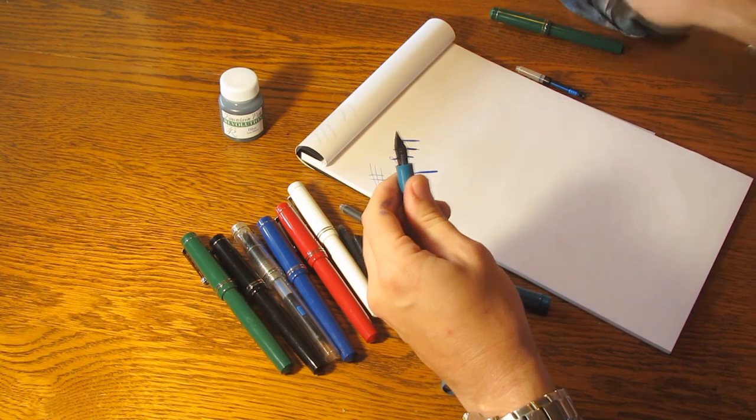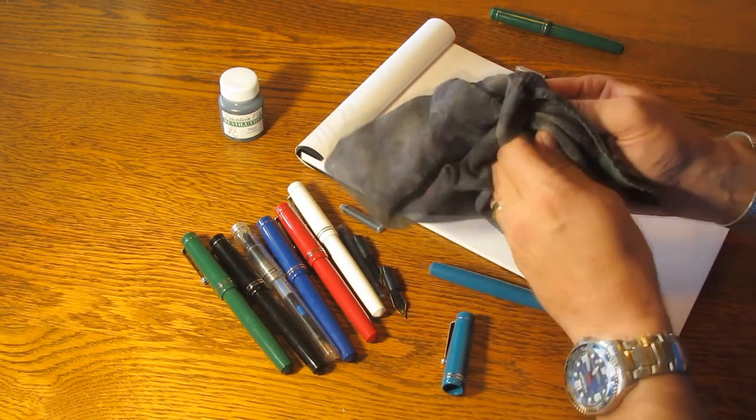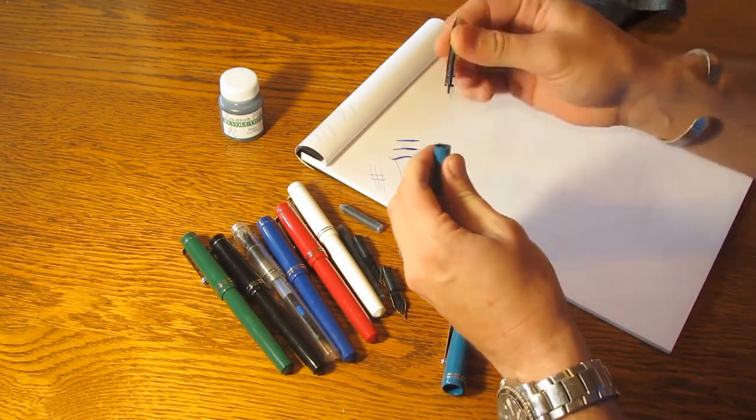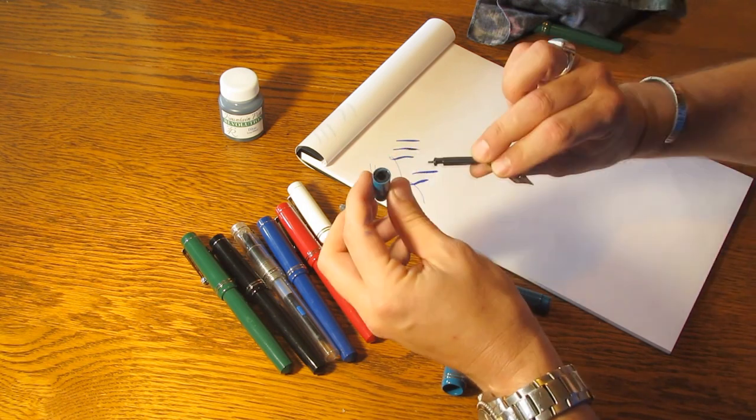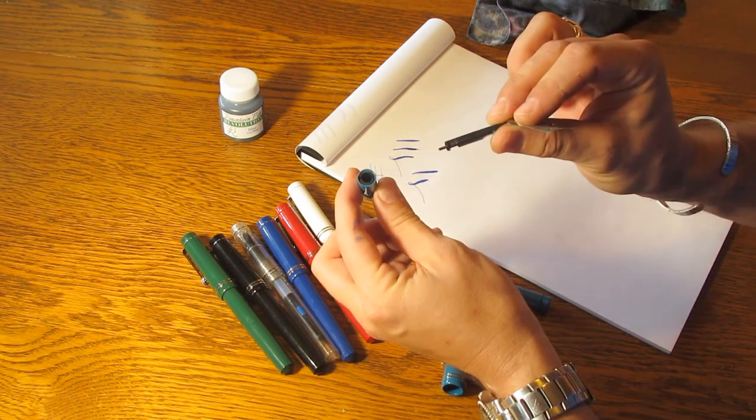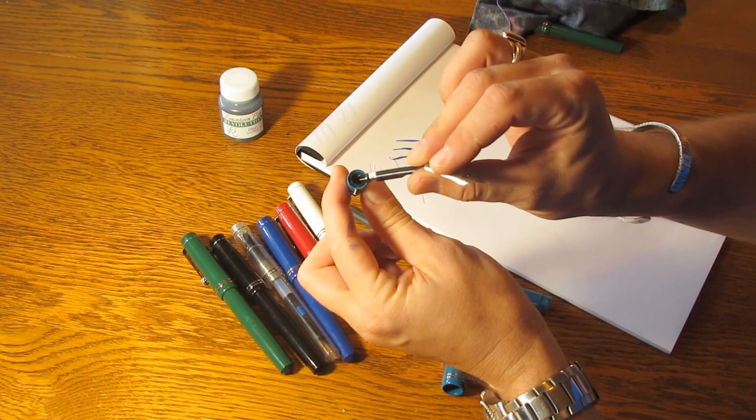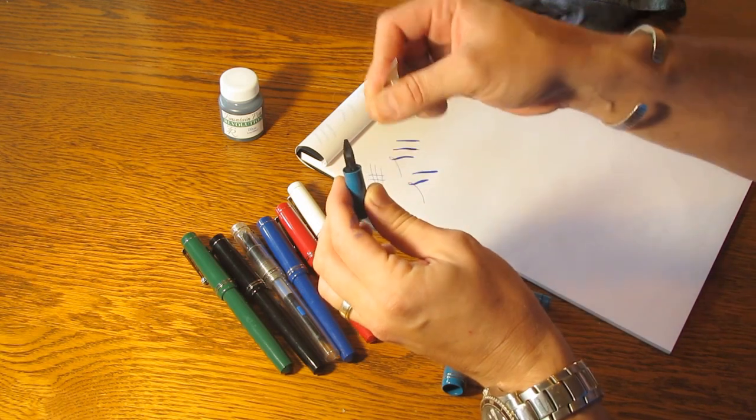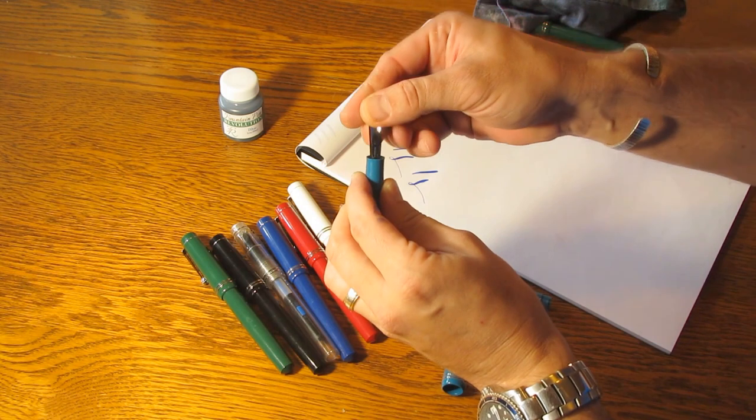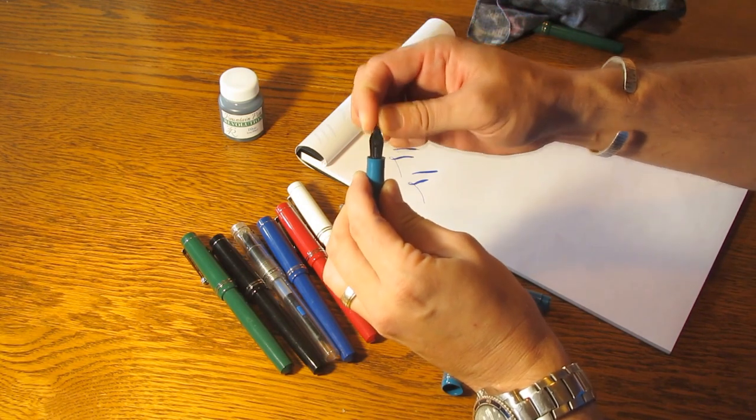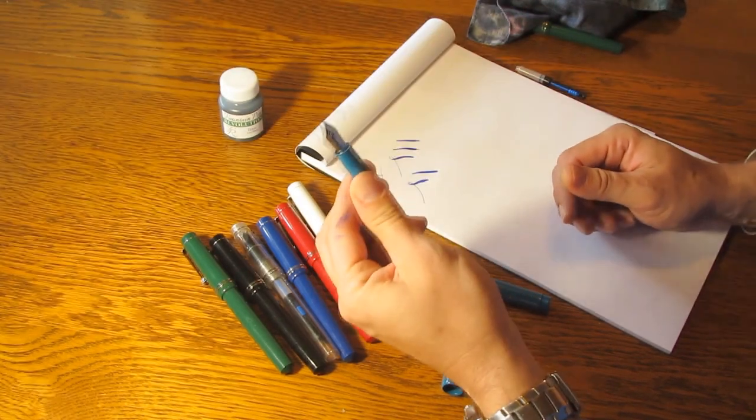You can also remove the nib and feed for cleaning. They're friction fit, so just give them a little tug there and those will come out. You clean your nib and feed with some soapy water. And then when you reinstall, you'll notice there's a groove in the section that will indicate where the feed goes. Press the feed in, you can slide the nib in behind there. They're pretty easy to fit.